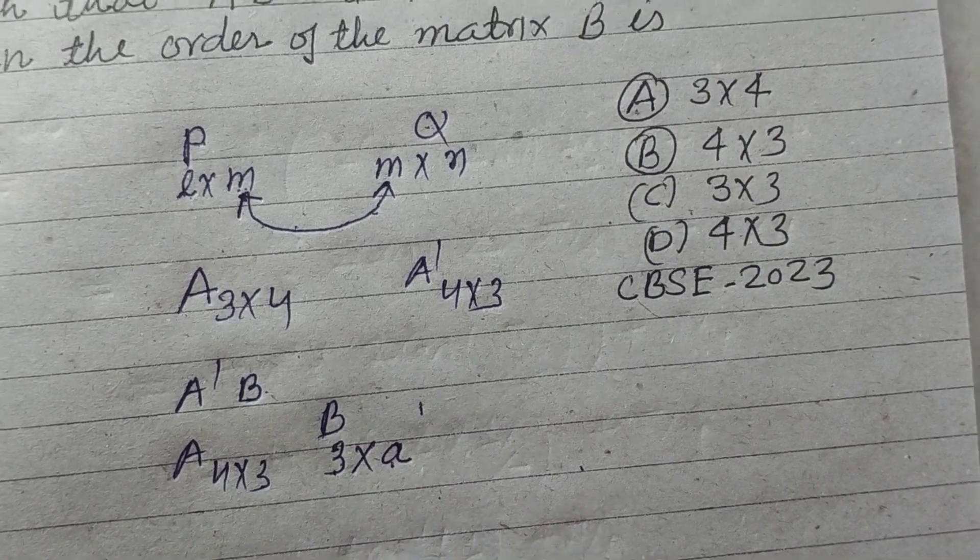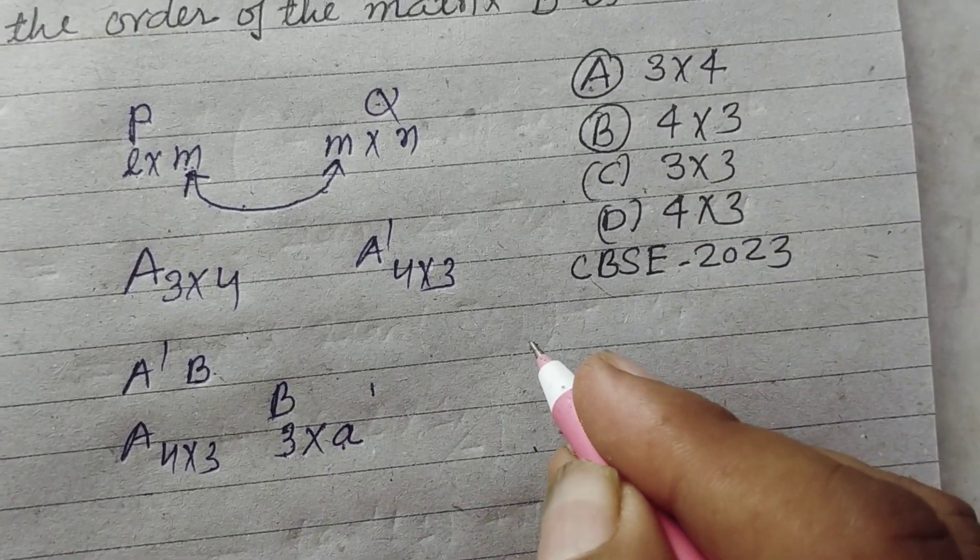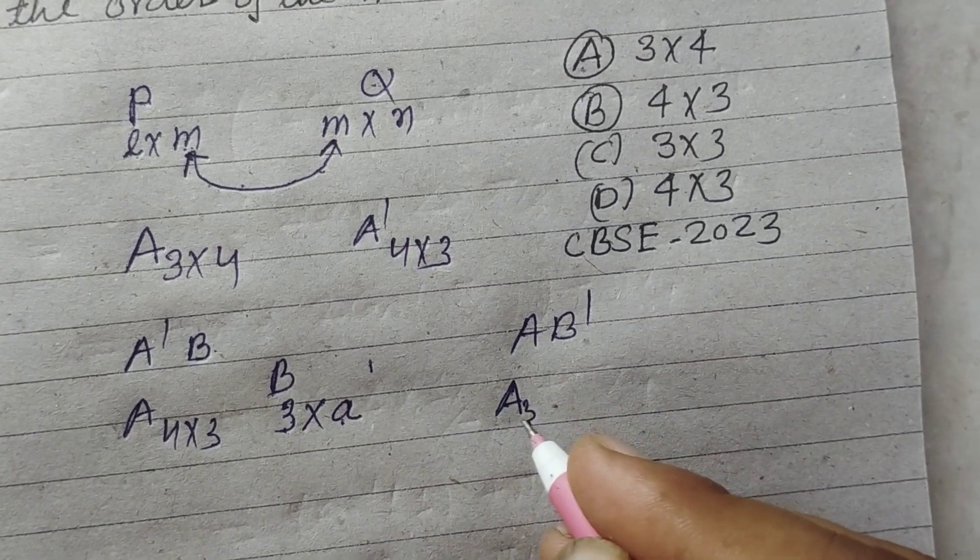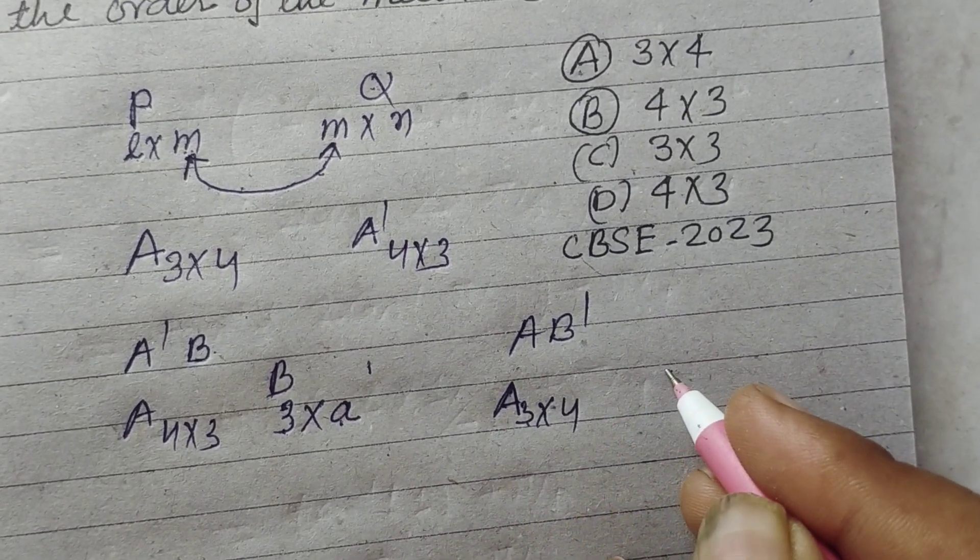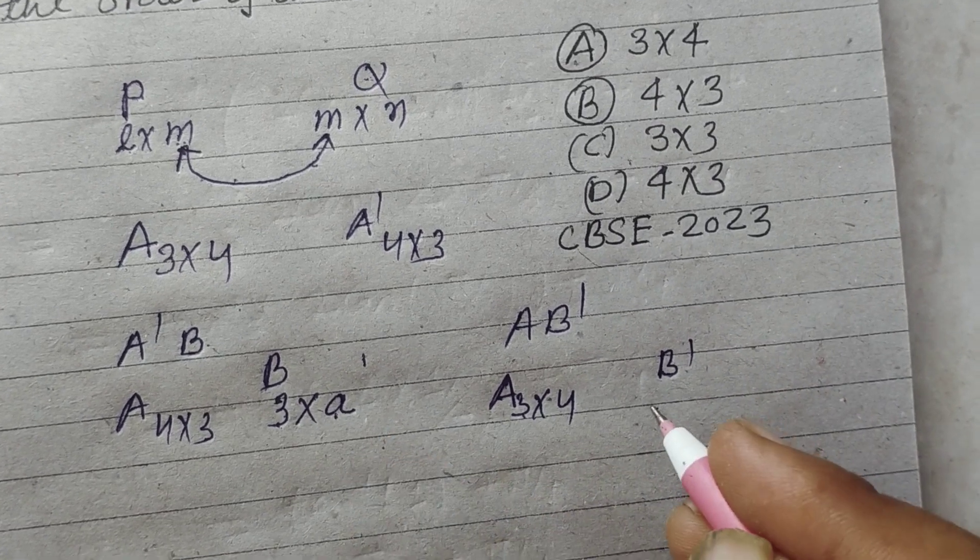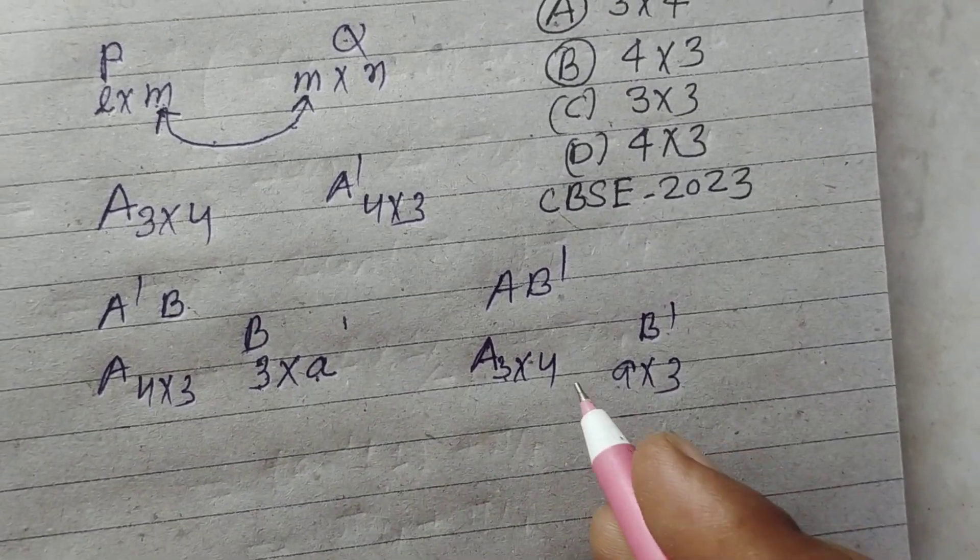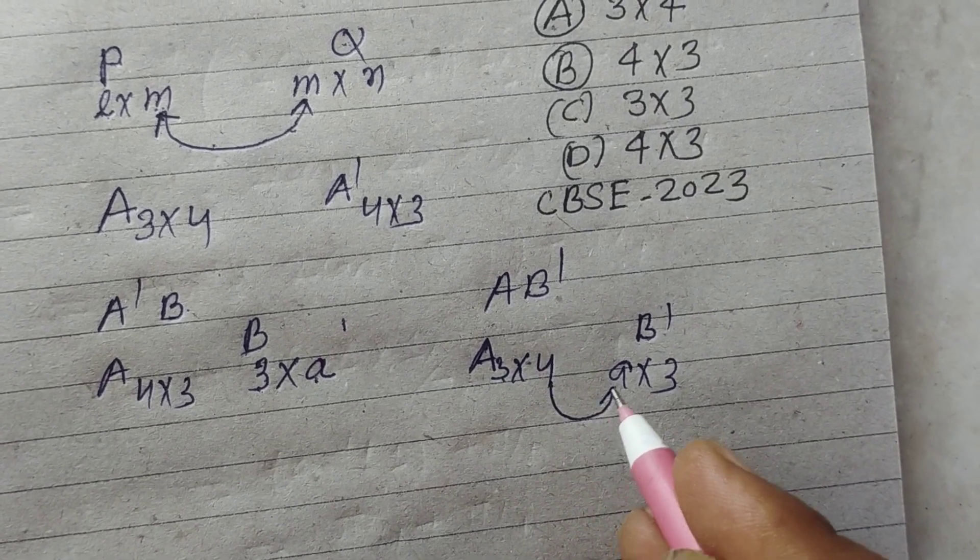So this will be same. Now AB' is also defined and A is 3 into 4 and B' is alpha into 3. We change the order of the matrix. Now this will be same if it is defined.